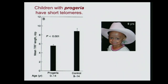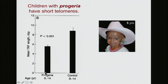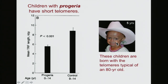Children born with the terrible disease progeria are born with much shorter telomeres than the rest of us. In fact, these children are born with telomeres that are the typical length of an 80-year-old, so they have telomeres that are going to wear out really, really fast.